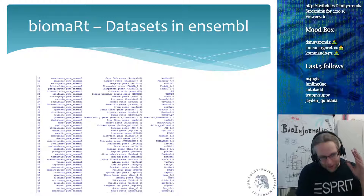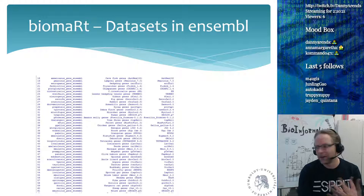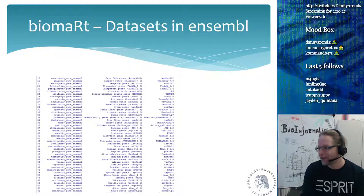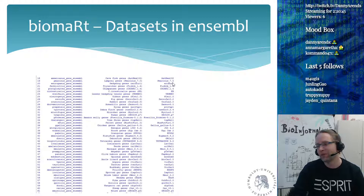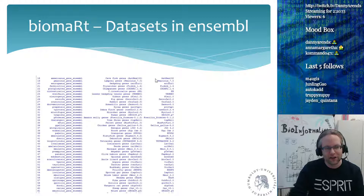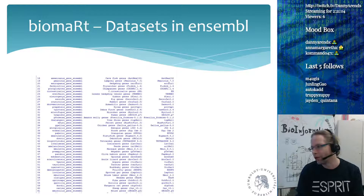The first column is the name of the dataset. The second column is a human-readable description. The third column is the interesting one — something you have to remember — which version of the database you are using. For example, the cave fish database is 'pmarinus_7.0.' If you write a publication and want to mention which version of the genome you used, you have to specify this. So for example: 'we used Biomart to retrieve our genes and we are using the cave fish gene database version 7.0.' For every different species there are different versions and they get updated independently.